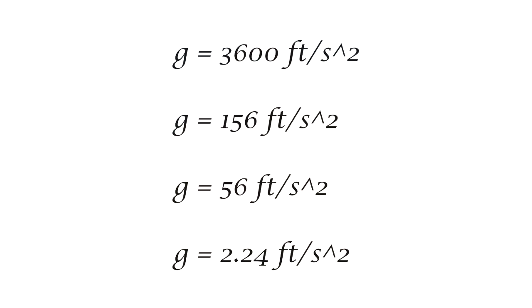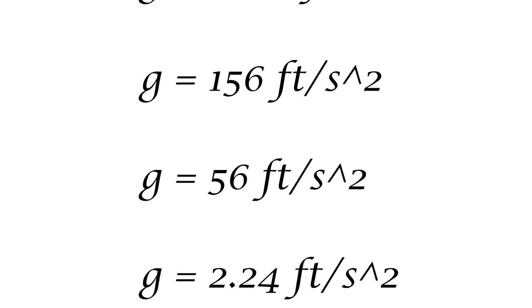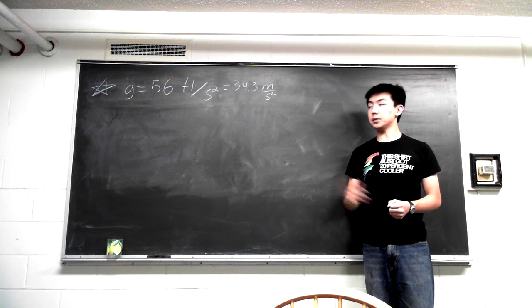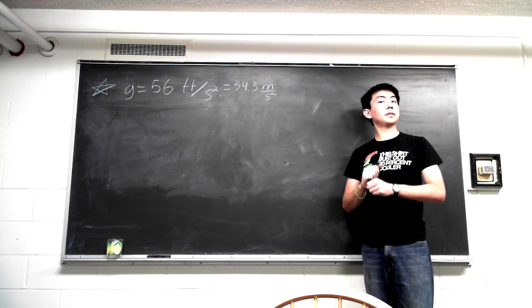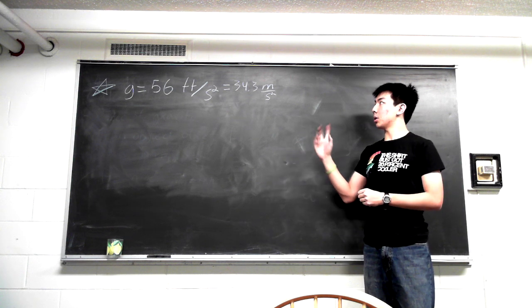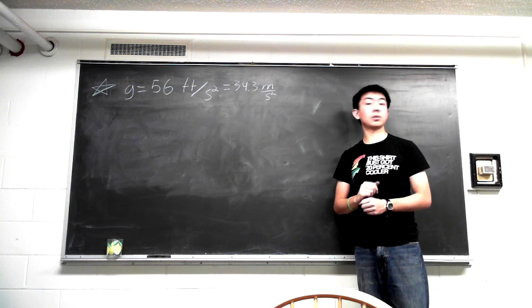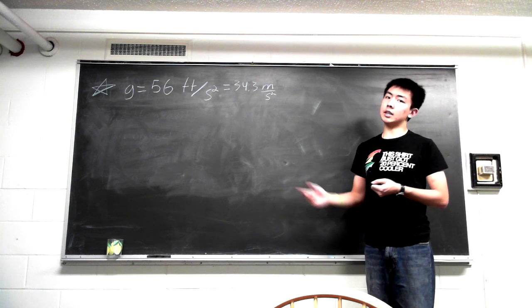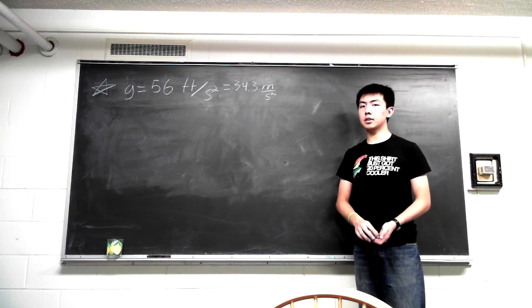Just for argument's sake, we will be using this value of G, so the acceleration due to gravity on the surface of the equestrian planet is 56 feet per second squared. So now that we have G equals 56 feet per second squared, or in SI units 34.3 meters per second squared, how do we get to the mass and size of the equestrian planet?